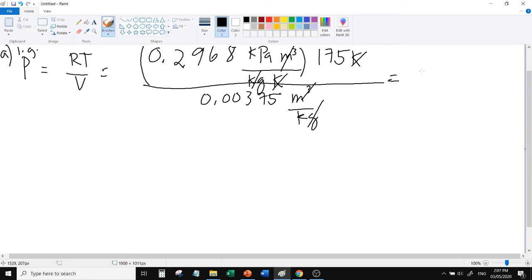Multiply with the given temperature of 175 Kelvin over the given specific volume 0.00375 meter cube per kilogram. Let's cancel the units. What remains is kilopascal which is correct for pressure. Using the ideal gas equation, we get 13,851 kilopascal.